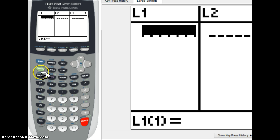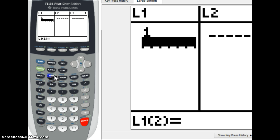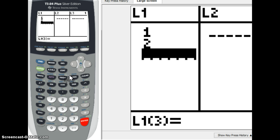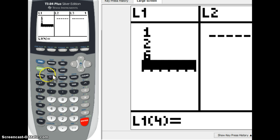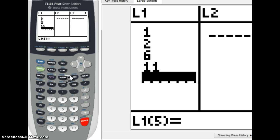So, what am I going to do? I'm going to enter 1, 2, 6, 11. 1, enter. 2, enter. 6, enter. 11, enter. Now, you see I have four numbers. Now, you see we have four numbers in the list.